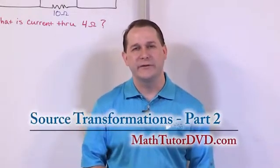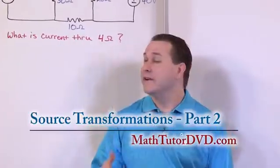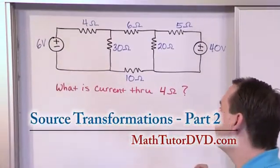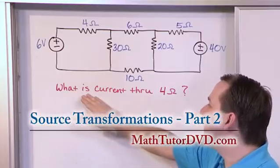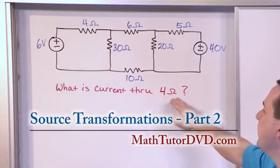Hello and welcome to the section of the circuit analysis tutor. Here in this section we're going to work this problem with source transformations to find out what is the current through the 4 ohm resistor.